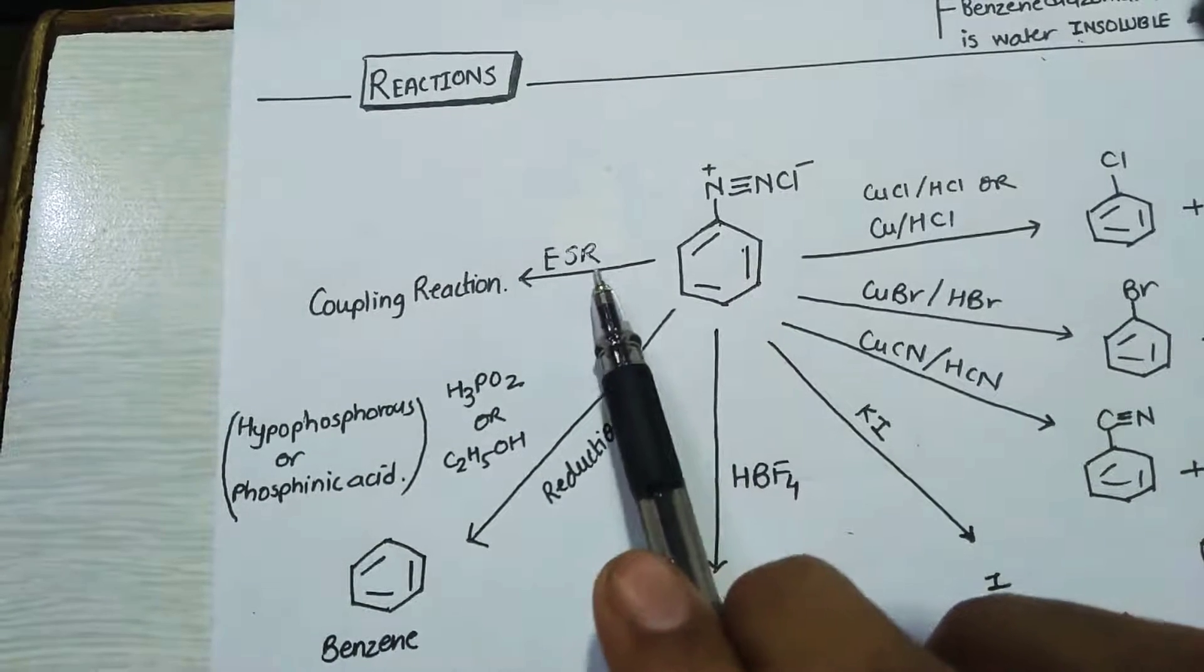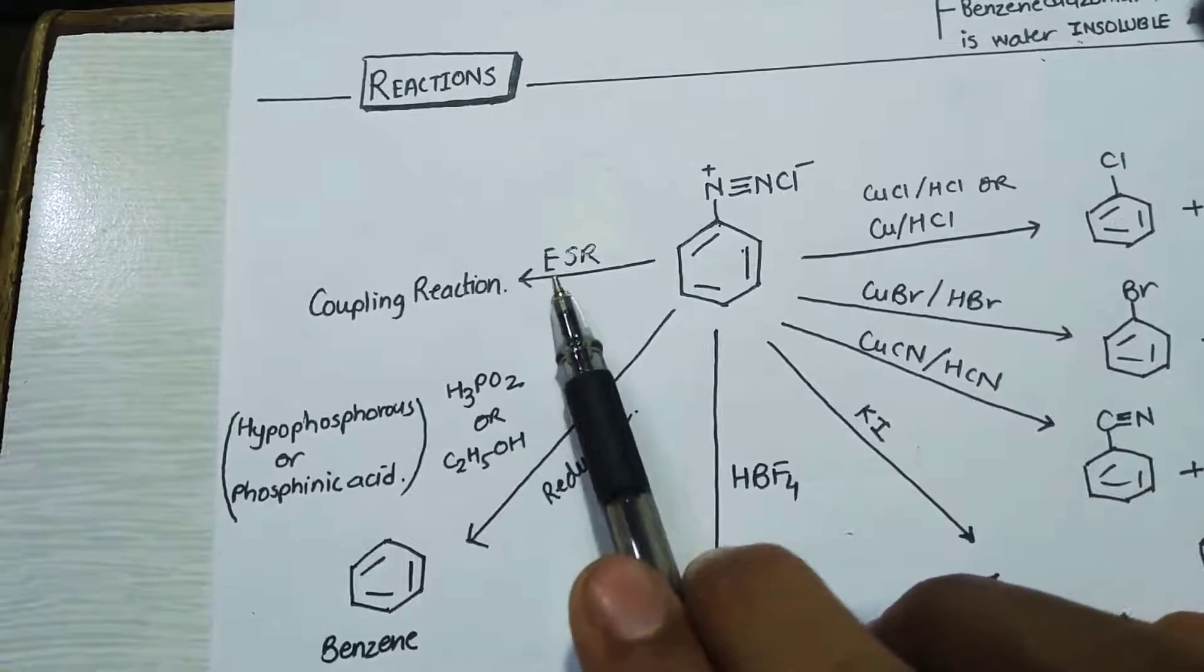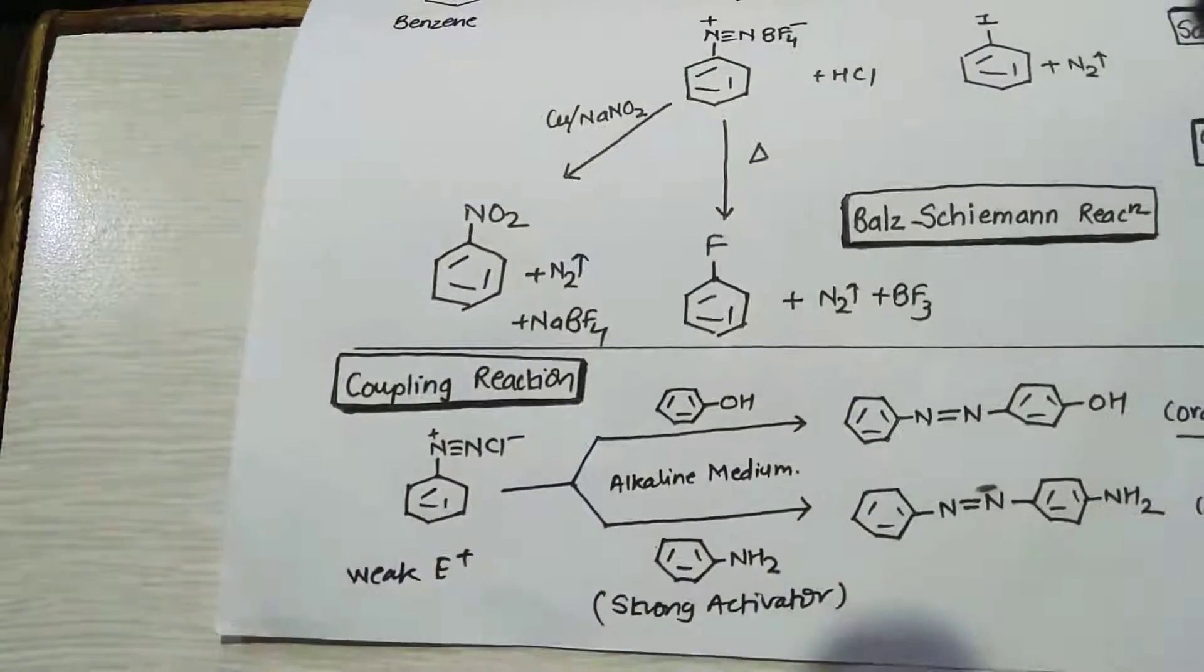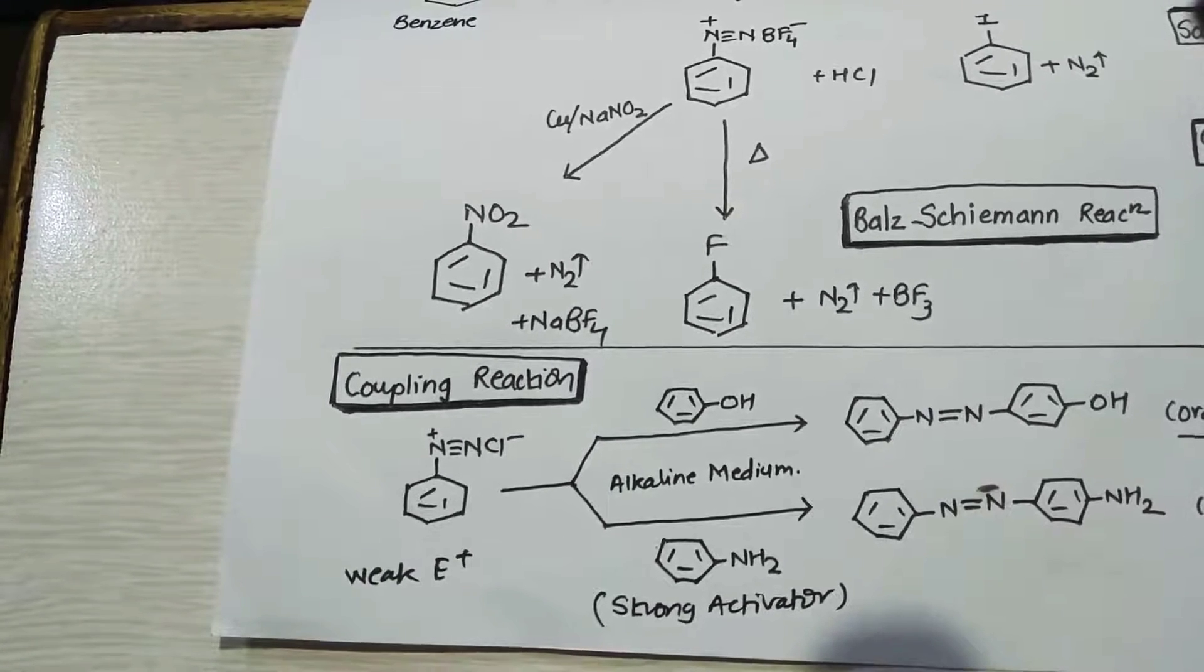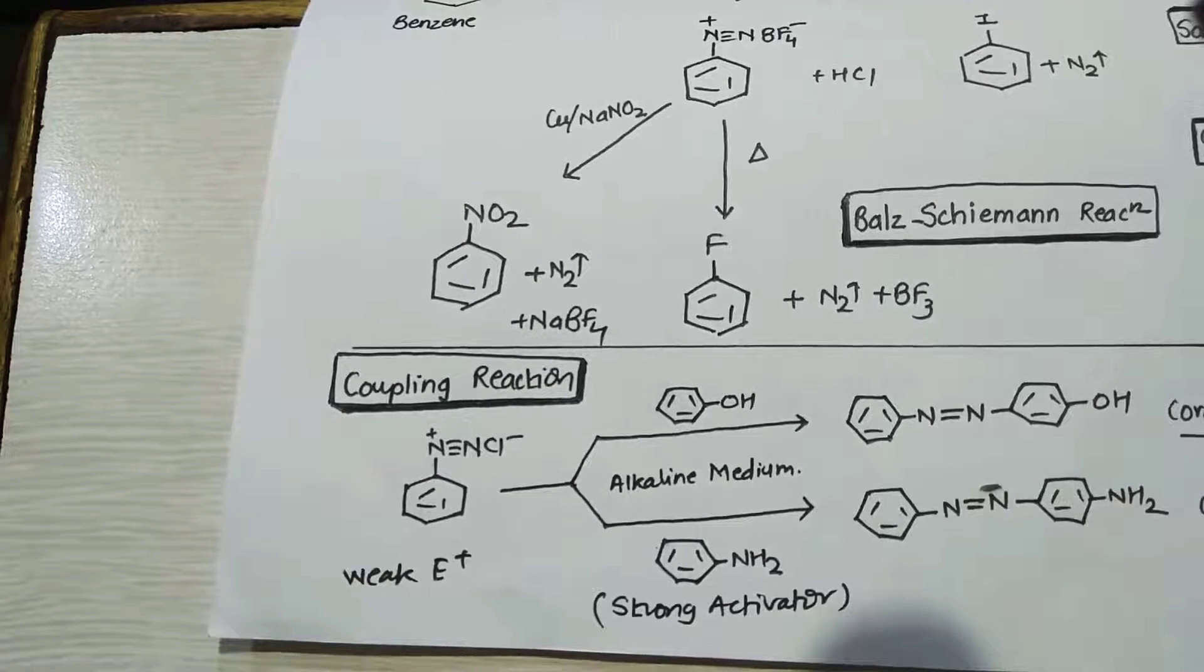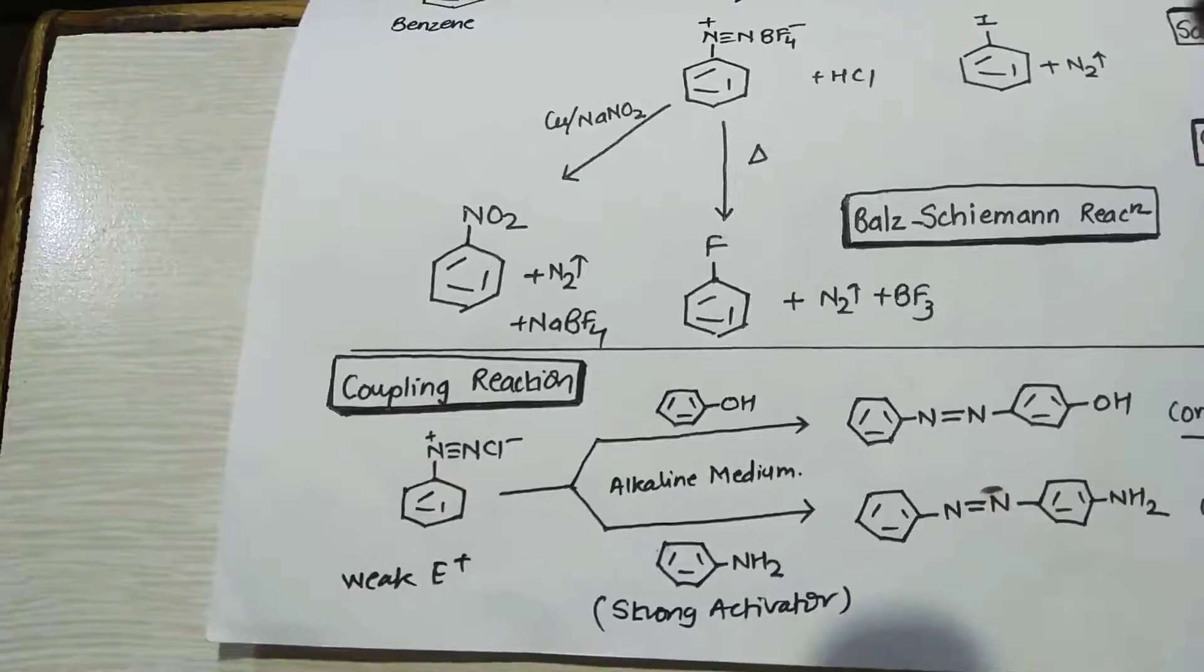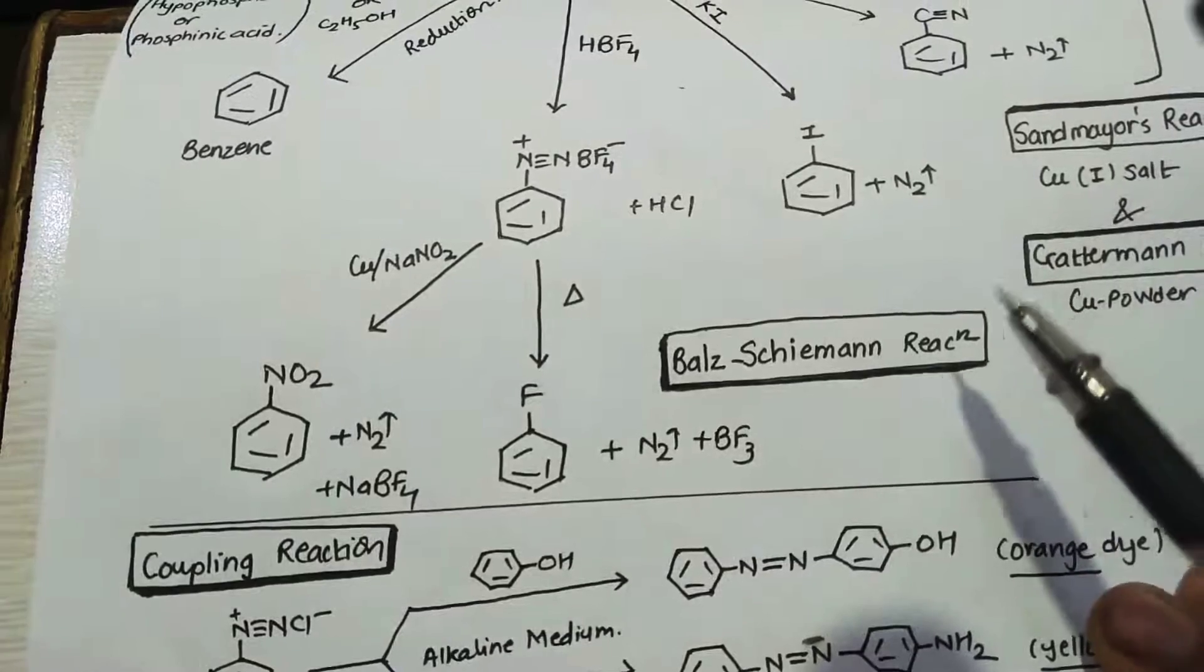Let's quickly check this out. In the coupling reaction, diazonium chloride is coupled with phenol or aniline. See, phenol or aniline, both are ortho-para directors and both are strong activators. So when such strong activators are treated with diazonium chloride, which is a weak electrophile, then electrophilic substitution will occur at the para position, and that will result in the azo compound.